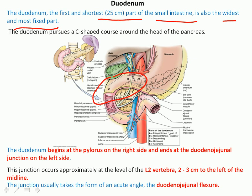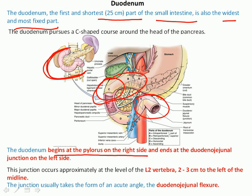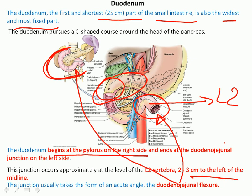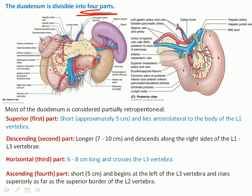The duodenum forms a C-shape structure around the head of the pancreas. It begins at the level of the pylorus on the right side and ends at the duodenojejunal junction on the left side. This junction occurs approximately at the level of L2 vertebra, 2–3 centimeters to the left of the midline, and usually takes the form of an acute angle called the duodenojejunal flexure. Most of the duodenum is considered partially retroperitoneal, except for the superior first part.